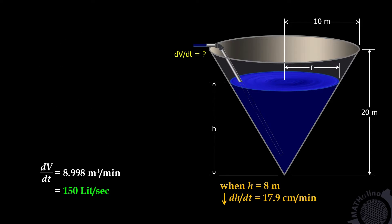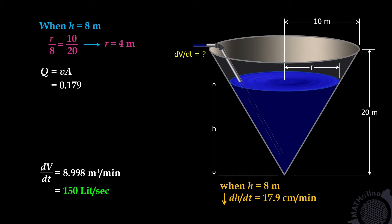Now we are going to use the formula discharge equals velocity times area to solve this problem. We go directly to the condition when h equals 8 meters. By proportion, r to 8 equals 10 to 20, so r equals 4 meters. Discharge equals velocity times area. The velocity is 17.9 cm per minute, or 0.179 meter per minute, times the area of the water surface: pi times 4 squared. The answer is 8.998 cubic meters per minute.